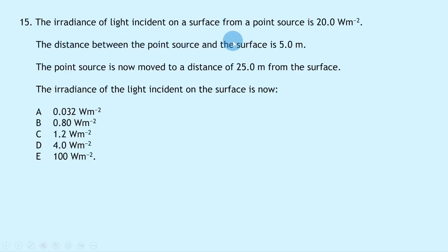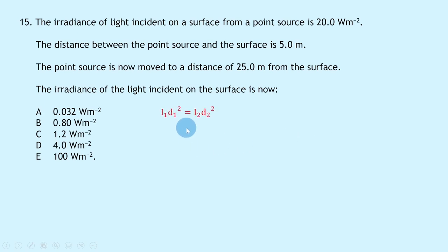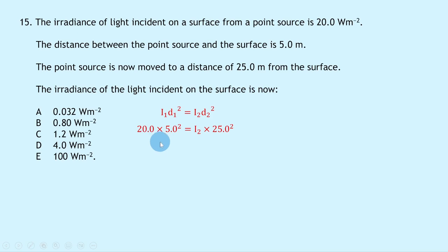Question 15: Irradiance from a point source is 20.0 W/m² at 5.0 m distance. The source moves to 25.0 m. Using I₁d₁² = I₂d₂²: 20.0 × 5.0² = I₂ × 25.0². Solving: I₂ = (20.0 × 25) / 625 = 0.80 W/m² — answer B.